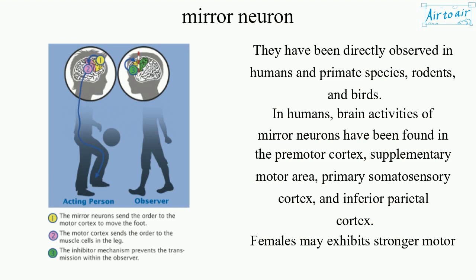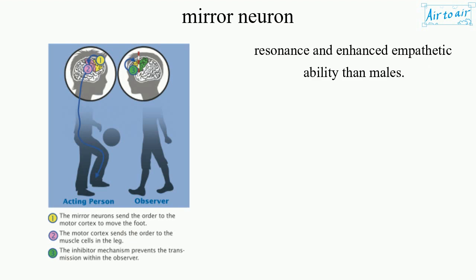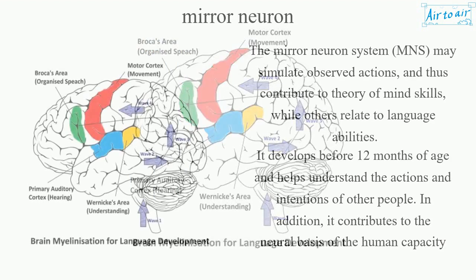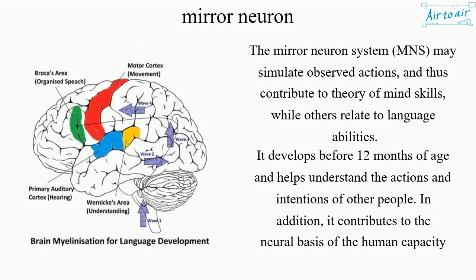Females may exhibit stronger motor resonance and enhanced empathetic ability than males. The mirror neuron system, MNS, may simulate observed actions and thus contribute to theory of mind skills, while others relate to language abilities. It develops before 12 months of age and helps understand the actions and intentions of other people.